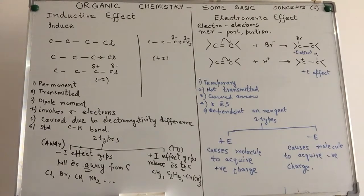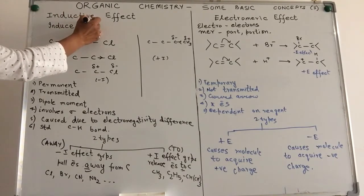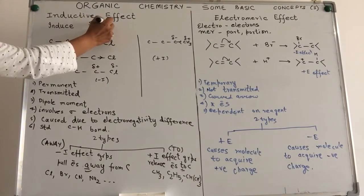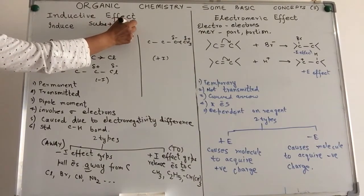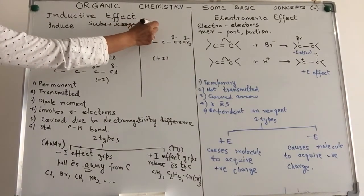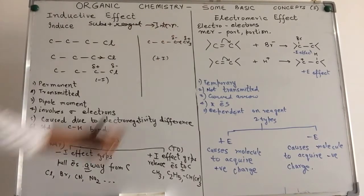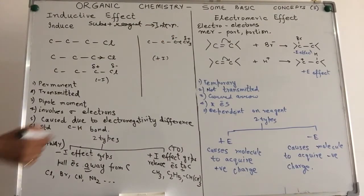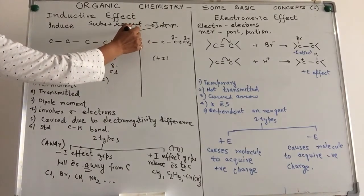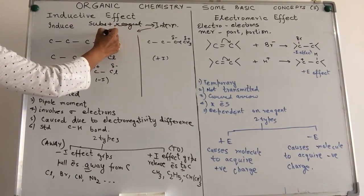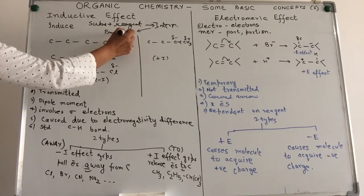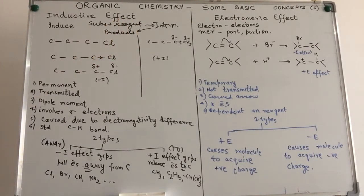When we talk about organic chemistry or study of organic compounds, we know that in any chemical reaction, the substrate is attacked by a reagent to give us what we call as an intermediate. This intermediate is unstable and it has a tendency to break down to give us what we call as products.